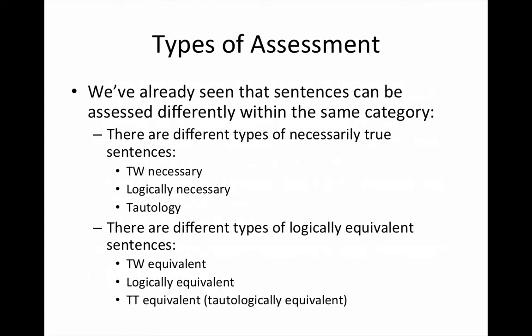Think about the types of assessment that we've looked at. We've seen that there are necessarily true sentences in Tarski's world that are not necessarily true on a truth table. That doesn't mean that the sentences are somehow not still necessarily true when they fail to be tautologies. It's more that the truth table does not function as a detection device for the sort of necessity that a Tarski's world necessary sentence fulfills the condition of necessity.